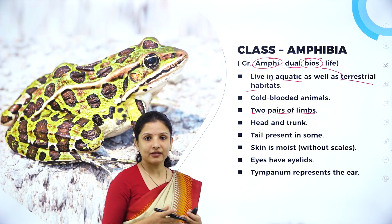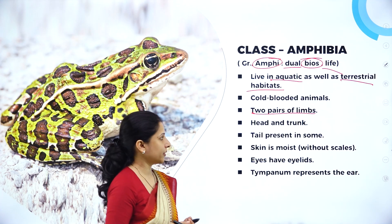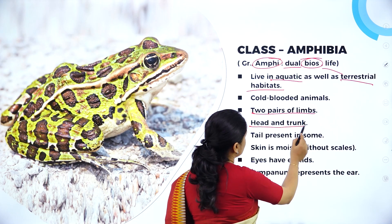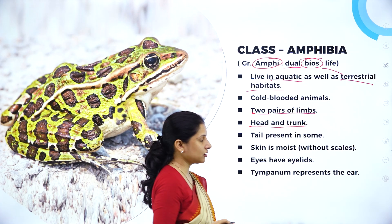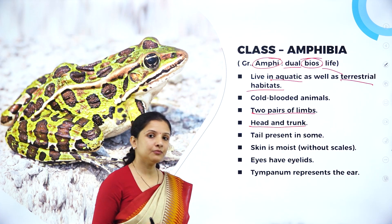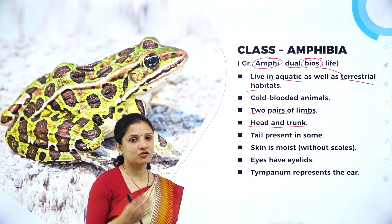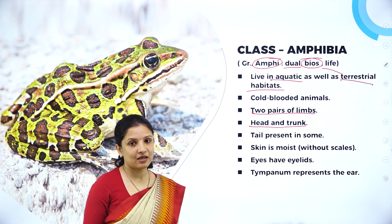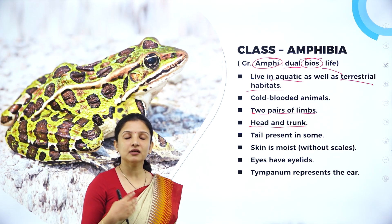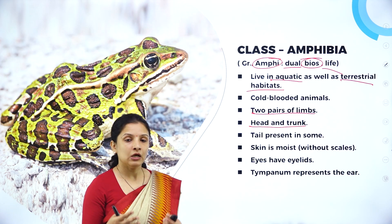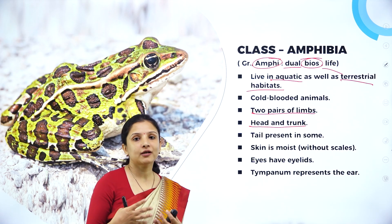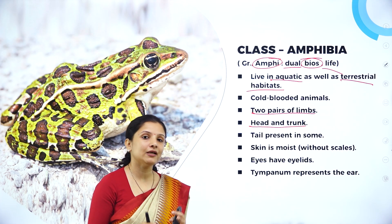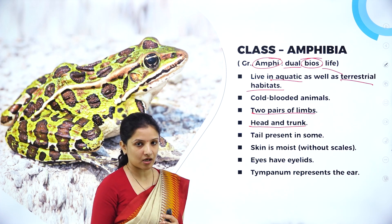It is the hindlimb that they use for hopping. The body is divided into head and trunk, and in some, the body is divided into head, trunk, and tail. For example, salamanders under amphibians have a tail. Frogs do not have a tail — their body is divided only into head and trunk, whereas in the case of salamanders, it is divided into head, trunk, and tail.